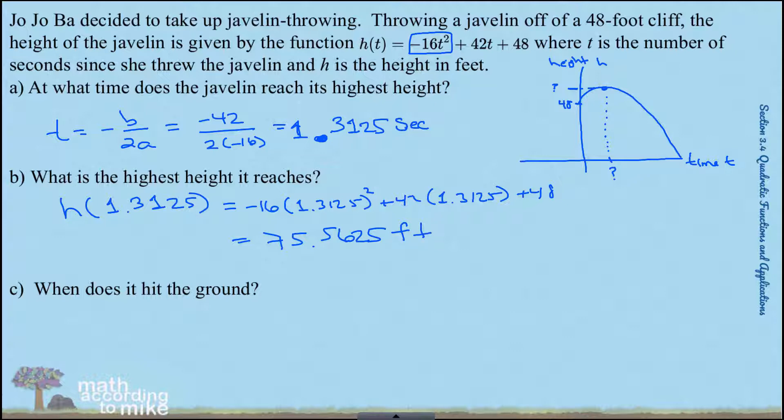Okay, as far as when does the javelin hit the ground? Well, objects hit the ground when the height off the ground is zero. So we're going to set h of t equal to zero and solve for t.